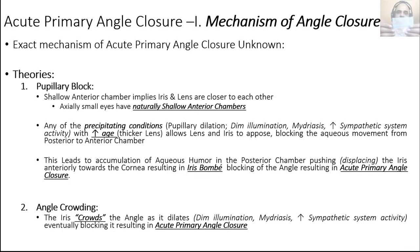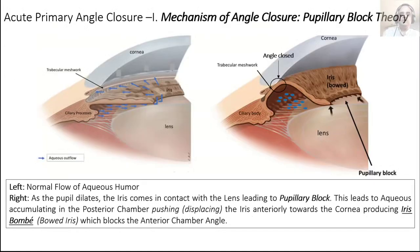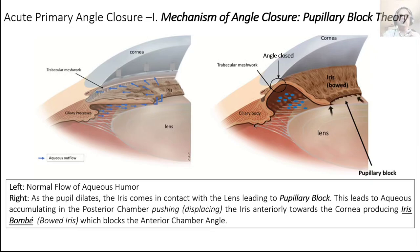As aqueous accumulates in the posterior chamber it starts pushing the iris anteriorly, making it into a bow-like configuration called iris bombé. This forward-bowing iris is then pushed against the anterior chamber angle, blocking it and displacing anteriorly, producing acute primary angle closure. This is what iris bombé looks like on OCT — a normal flat anterior chamber versus the forward bowing of the iris in response to aqueous collecting in the posterior chamber.